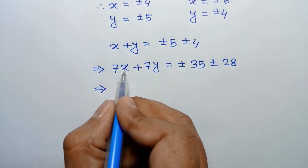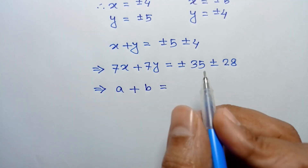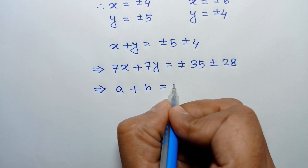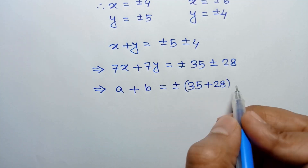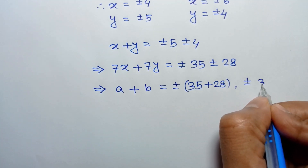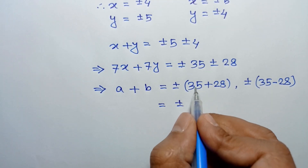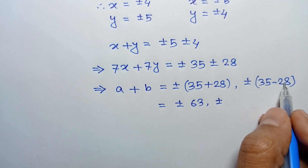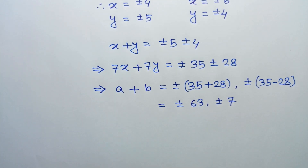Substituting 7x as a and 7y as b, we have a plus b equals plus or minus 35 plus 28 for the same signs, and plus or minus 35 minus 28 for opposite signs. So a plus b equals plus or minus 63 or plus or minus 7. Those are the values of a plus b. If you like this video, please subscribe to my channel. Thanks for watching.